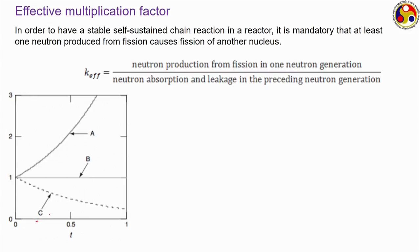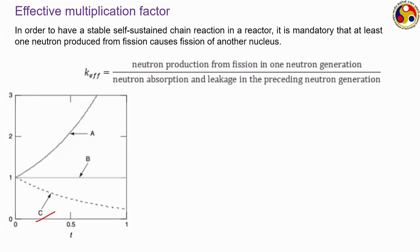Case C is the other extreme, where the effective multiplication factor is less than 1. For example, if 3 neutrons are available at the beginning of one generation and only 2 are available in the next generation, the effective multiplication factor is 2/3 ≈ 0.67. With fewer neutrons each generation, the probability of further fission decreases. So the rate of fission reaction keeps declining, and accordingly the rate of energy released from the reactor continuously decreases.